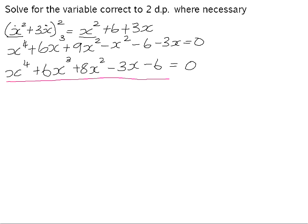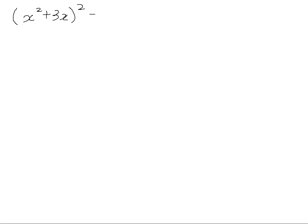If we look at the structure of the original equation, here we have an expression of x squared plus 3x. Here we have an x squared, and here we have a 3x. Because we have those repeated elements, we can use a method called substitution to solve this equation and get it into a more manageable form. So if we just start again: the equation we started with was x squared plus 3x, all squared, equals x squared plus 6 plus 3x.